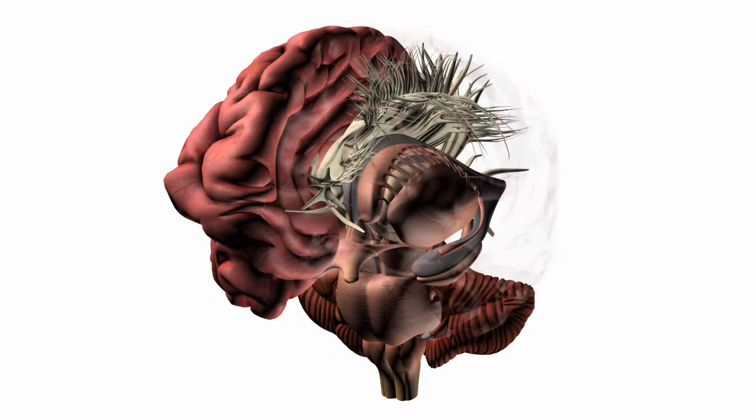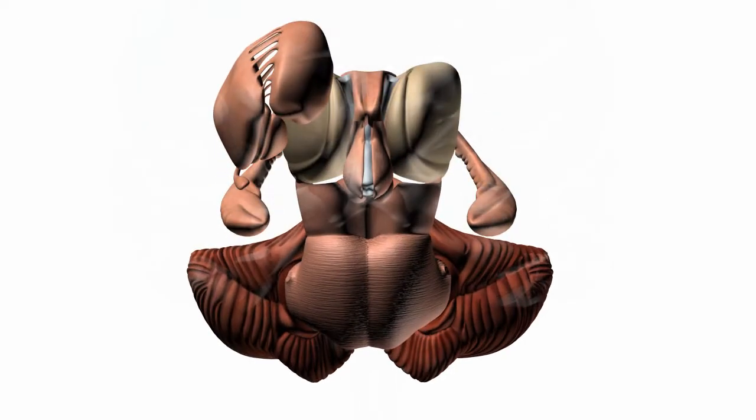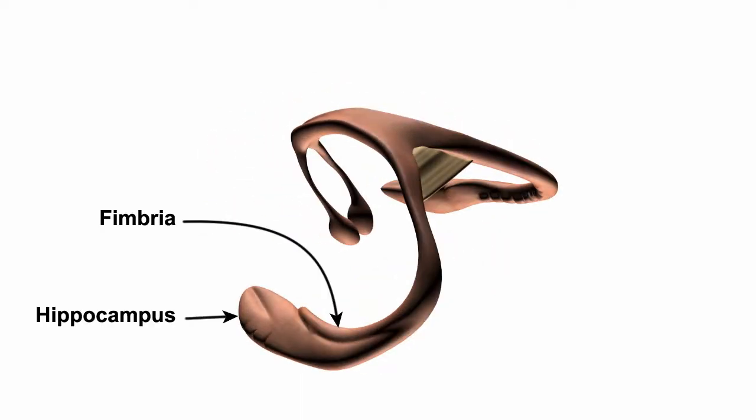We have two hippocampi, one on each hemisphere of the brain. They are effectively joined together by a white matter bundle, the fornix, which contains most of the efferent fibers that arise from each hippocampus via the cruce.